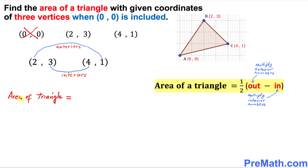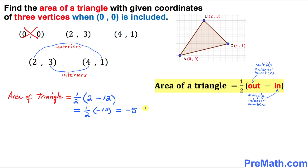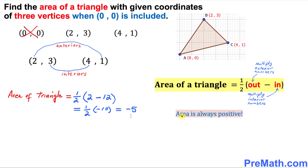So now we're going to calculate the area of this given triangle. The formula is one-half times (out minus in): we multiply the exterior numbers, two times one is two, then put a minus sign, and multiply the interior numbers, three times four is twelve. Simplifying, that gives one-half times negative ten, which is negative five. Since area is always positive, that becomes positive five.